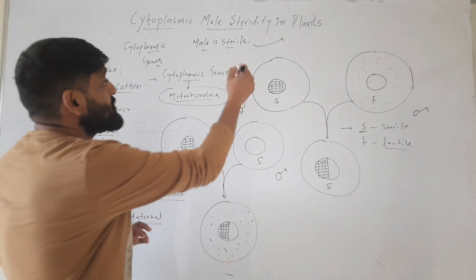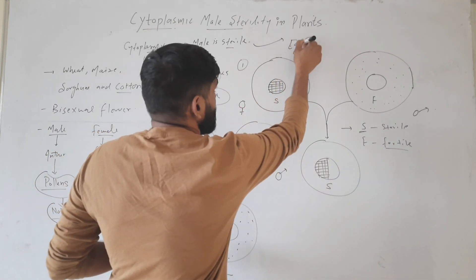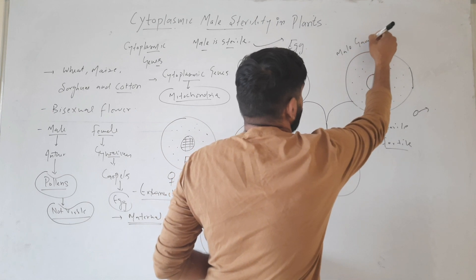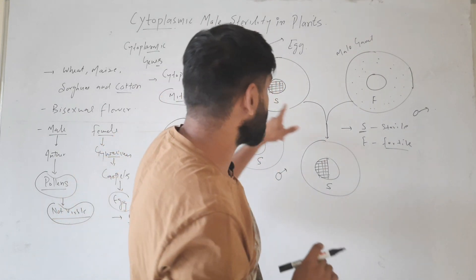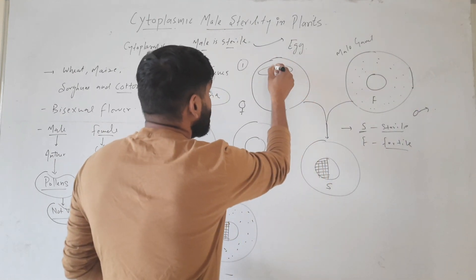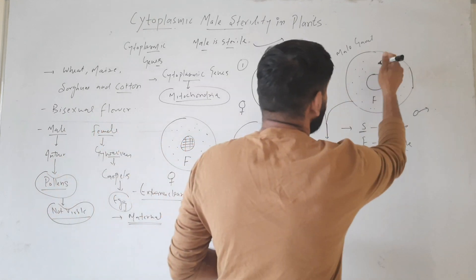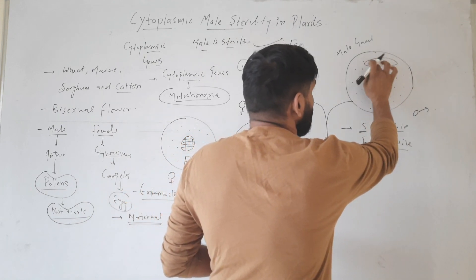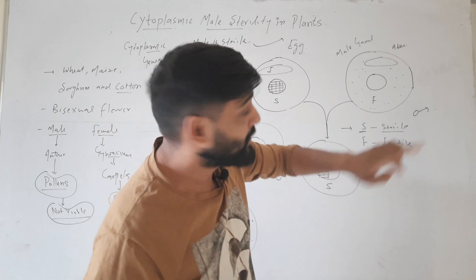Now we will look at these crosses. In this first cross, this is the nucleus of the female part, this is the cytoplasm of the female, and this is the nucleus of the male gamete with the cytoplasm of the male gamete. So this cytoplasm is sterile — S-type, sterile — meaning there is a gene on the mitochondria. In this mitochondria, there is a gene that causes male sterility. The female is S-type and the male gamete is F-type, fertile.